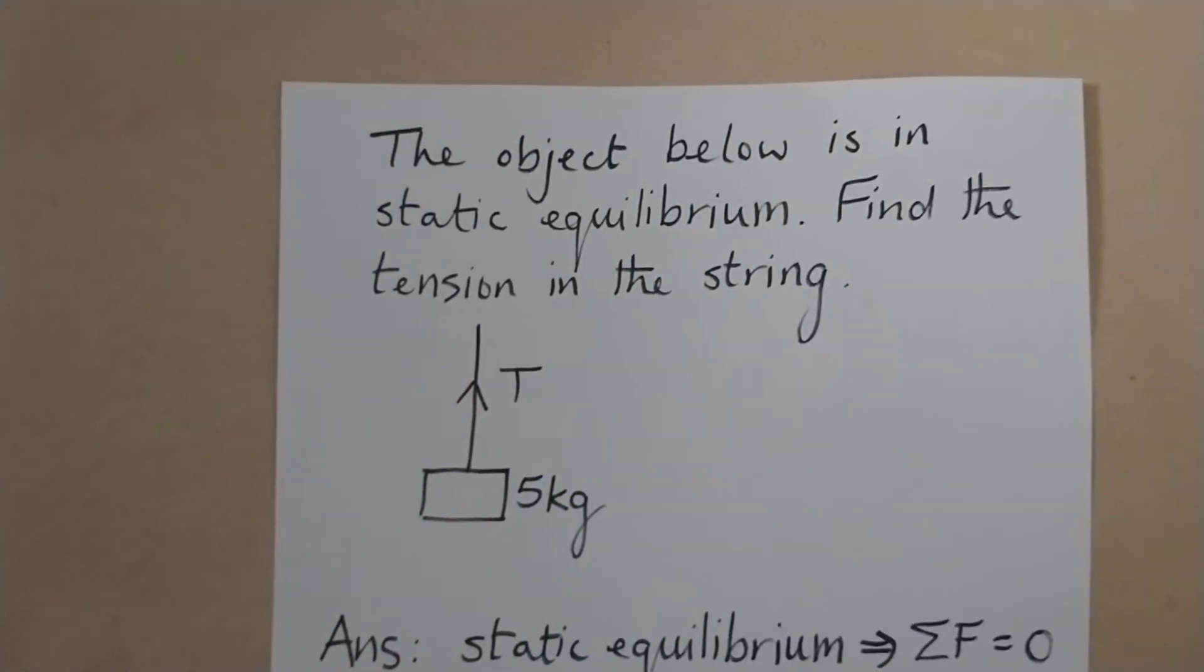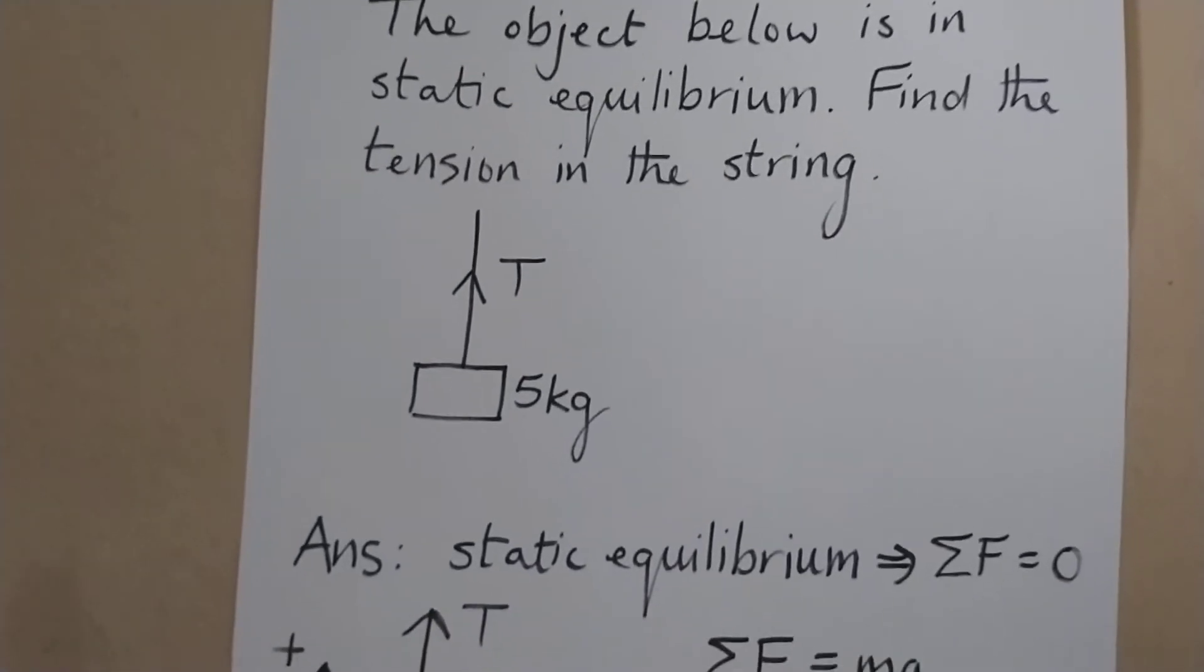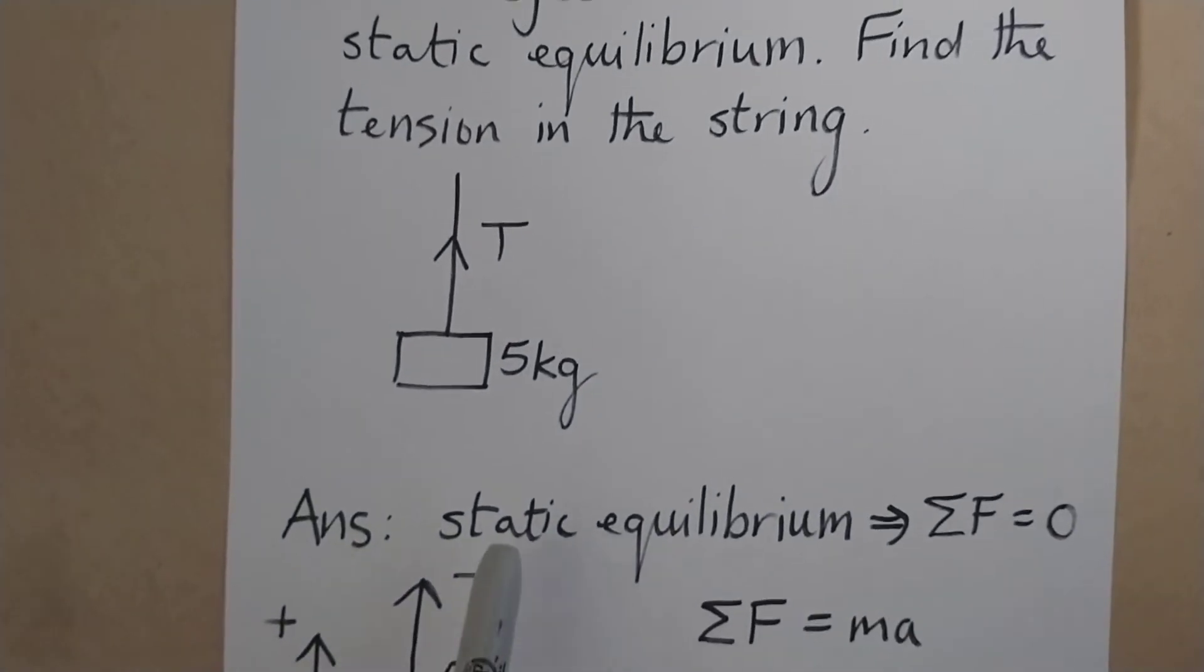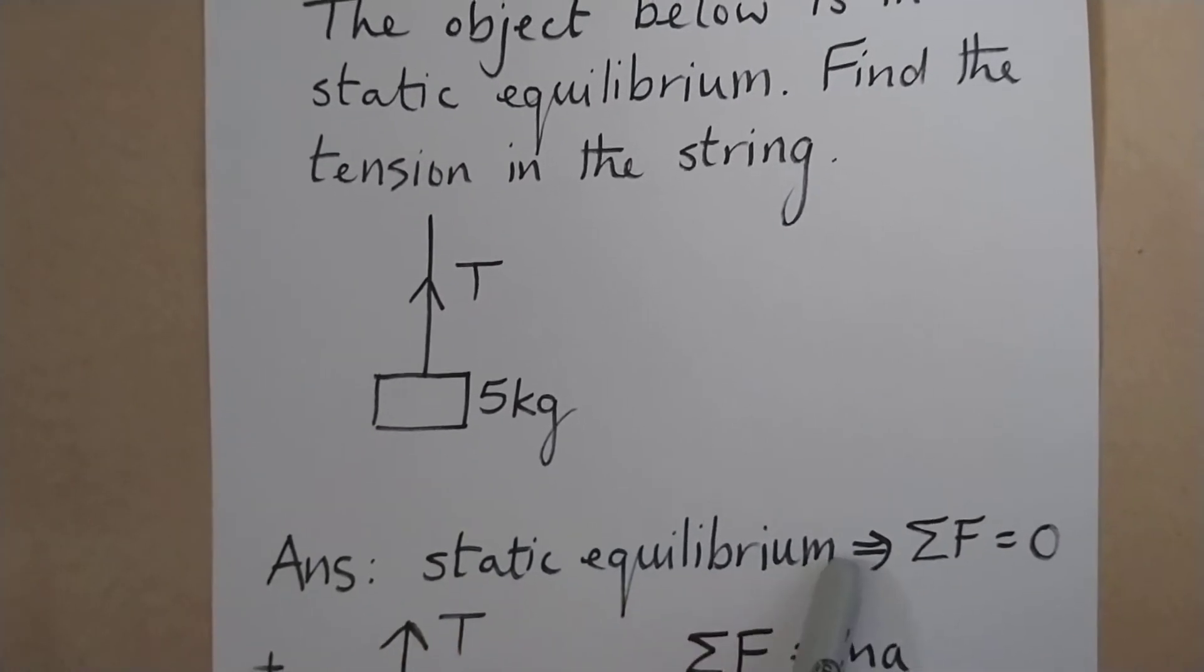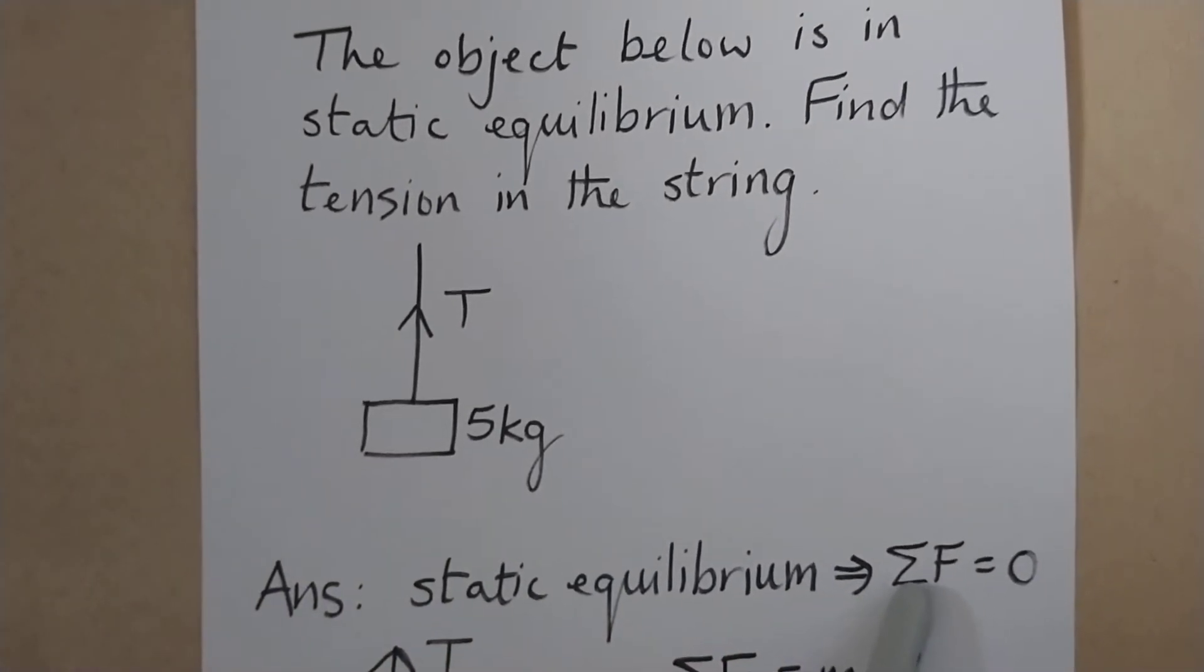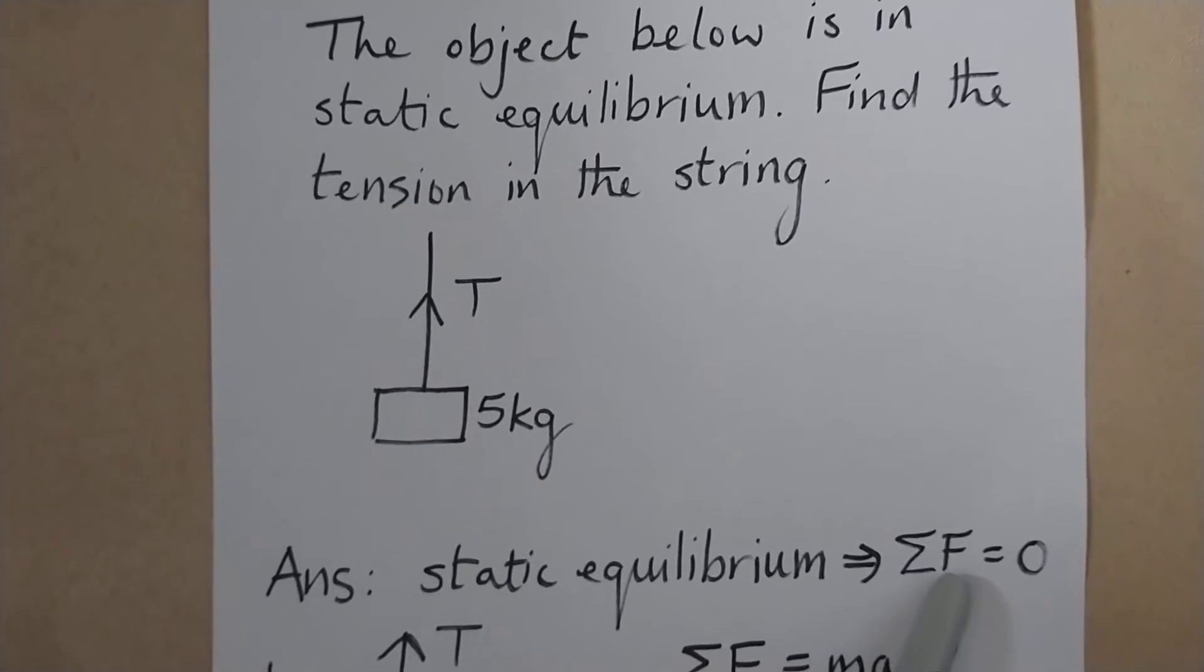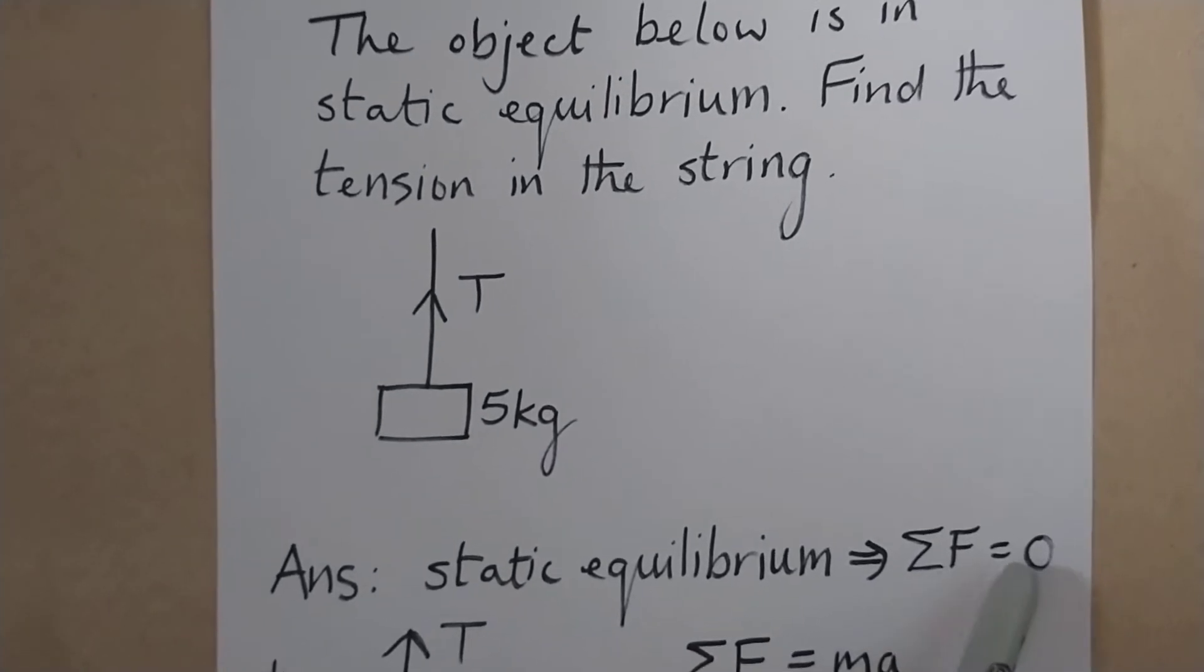The answer starts by noting that the question tells us that the thing is in static equilibrium, so that means the vector sum of the individual forces, or in other words the resultant force, is equal to zero.